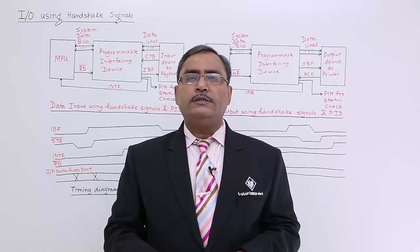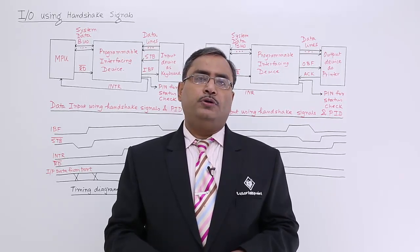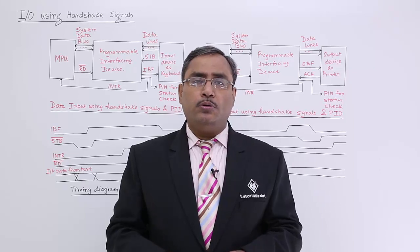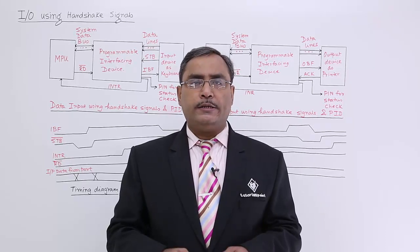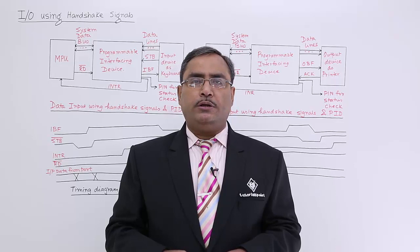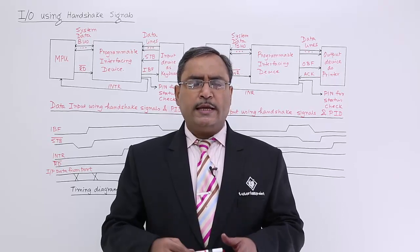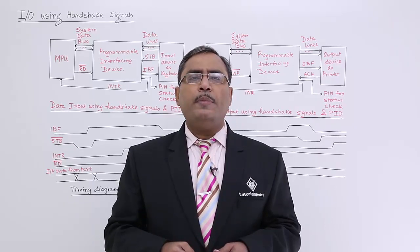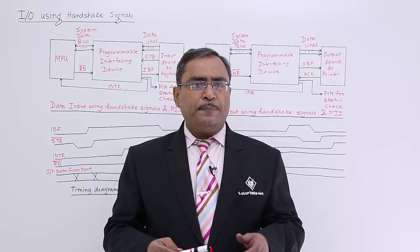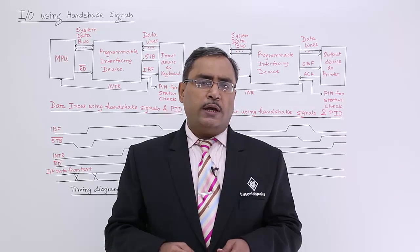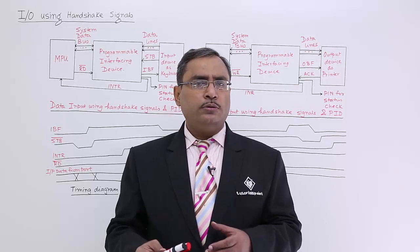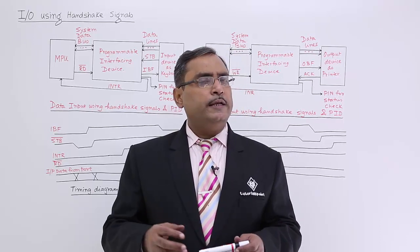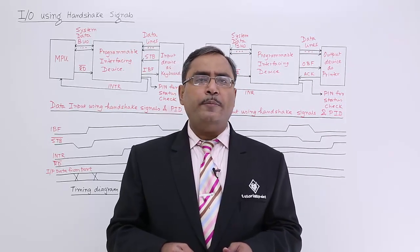In this session we are going to discuss input output using handshaking signals — how input devices like a keyboard and output devices like a printer can communicate with the processor unit. We are taking another circuitry in between as interfacing, known as the programmable interfacing device (PID). It will have a certain number of ports, and through those ports data will go out for output devices and come in for input devices. Let me discuss them using a diagram and a timing diagram.